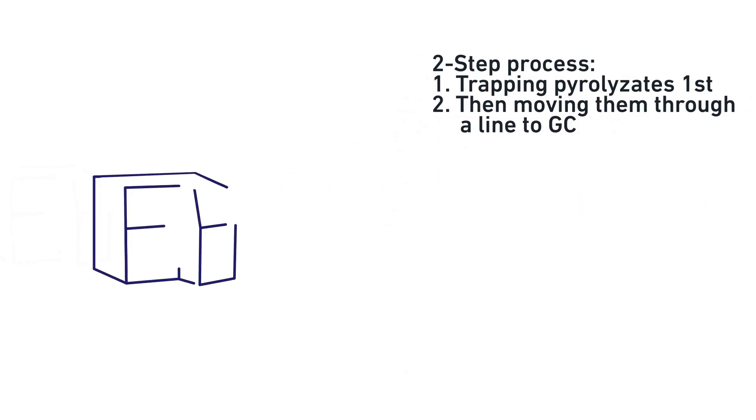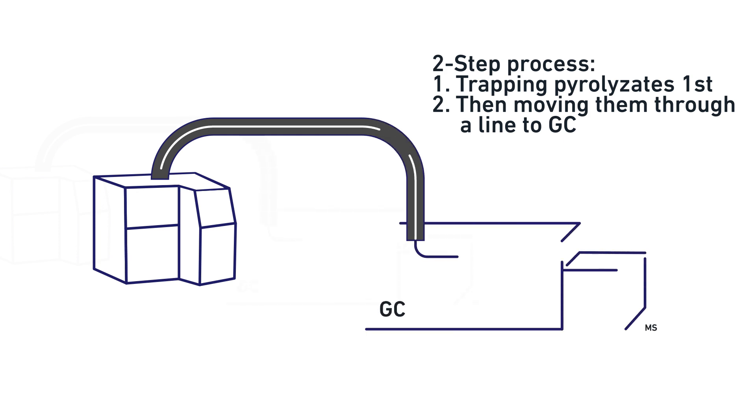Some filament pyrolyzers use a two-step process in which some of the pyrolyzates are first collected on a trap. A switching valve is then used to send the pyrolyzates from the trap through a long line into the gas chromatograph mass spectrometer.